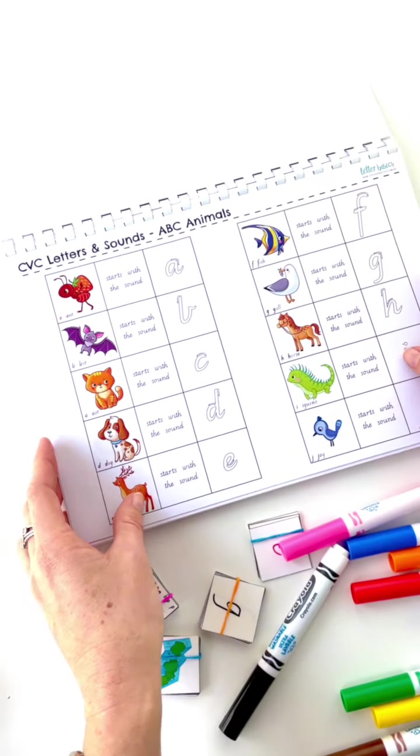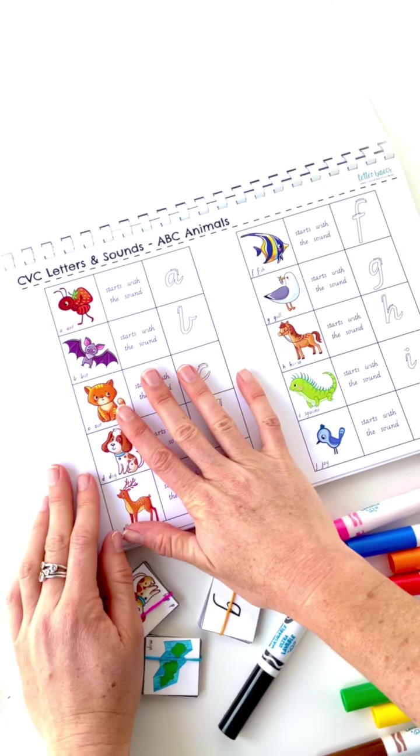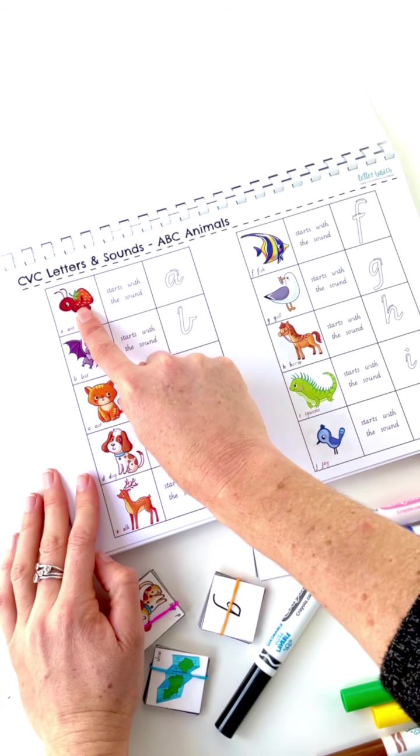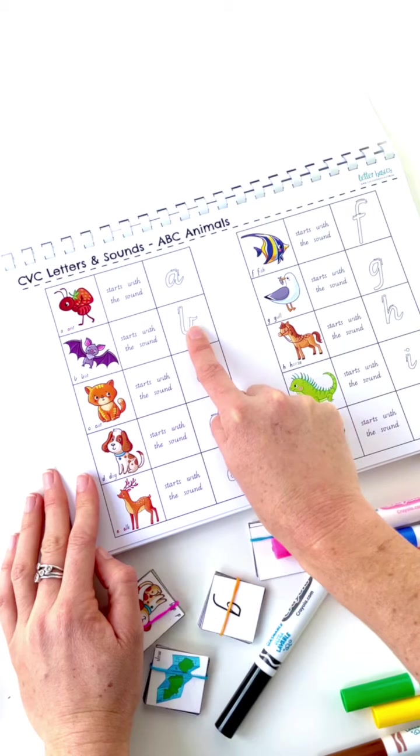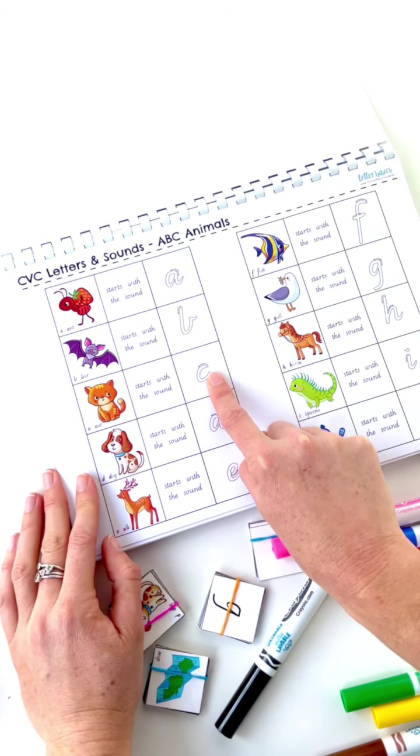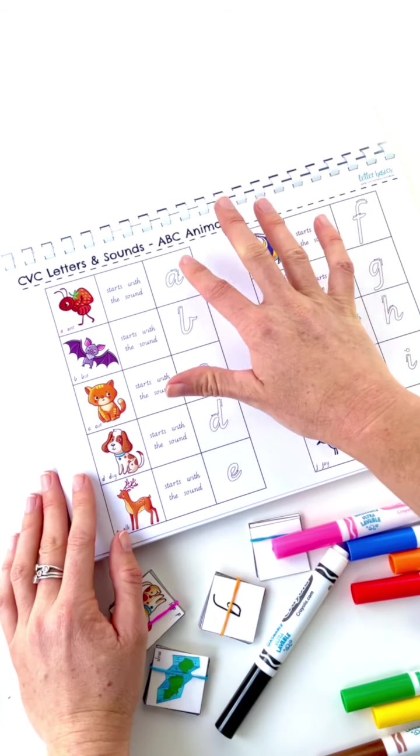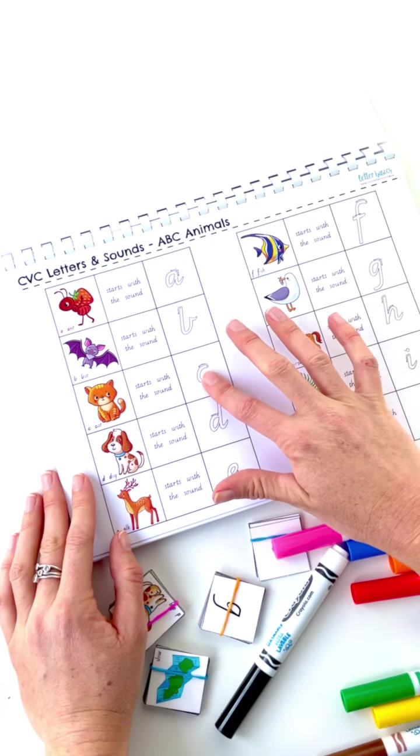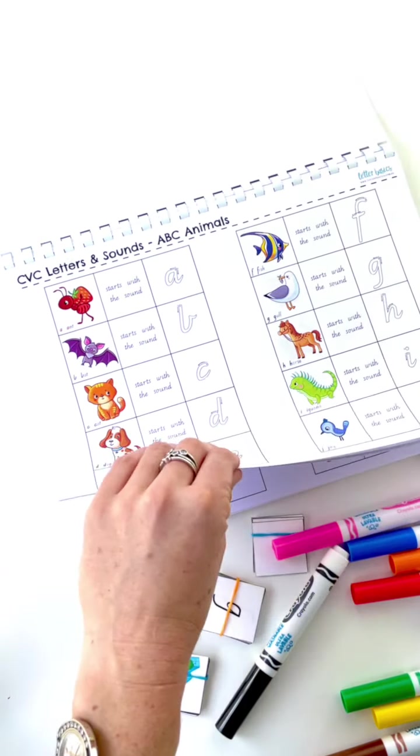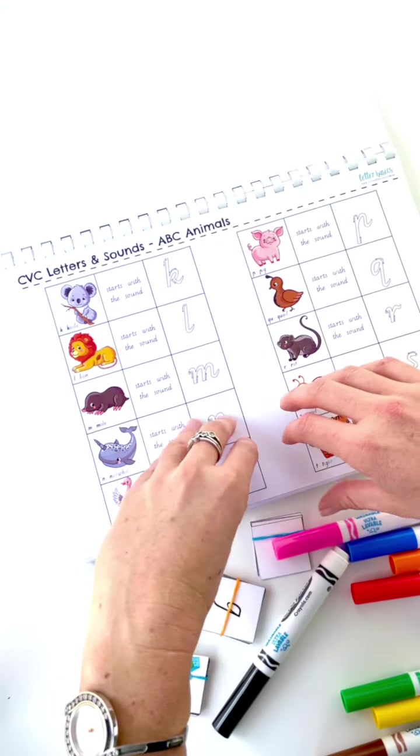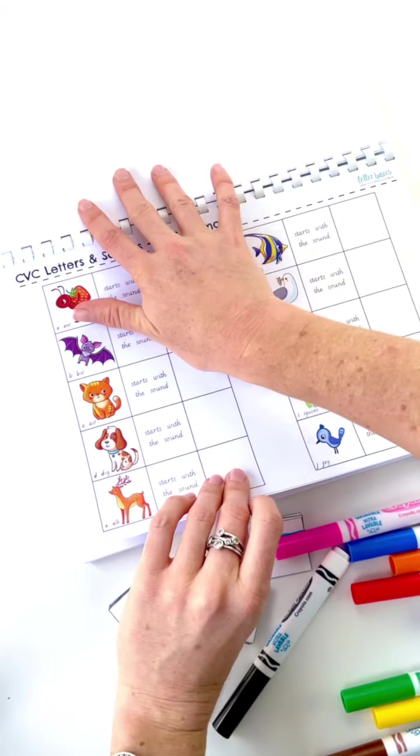And then from the very beginning, we've got our ABC animal sounds. So app for ant, ant starts with the sound app, bat starts with the sound but, cat starts with the sound cut. So we're not naming the letters. It's not ABC, it's at, but, cut. That's really important.